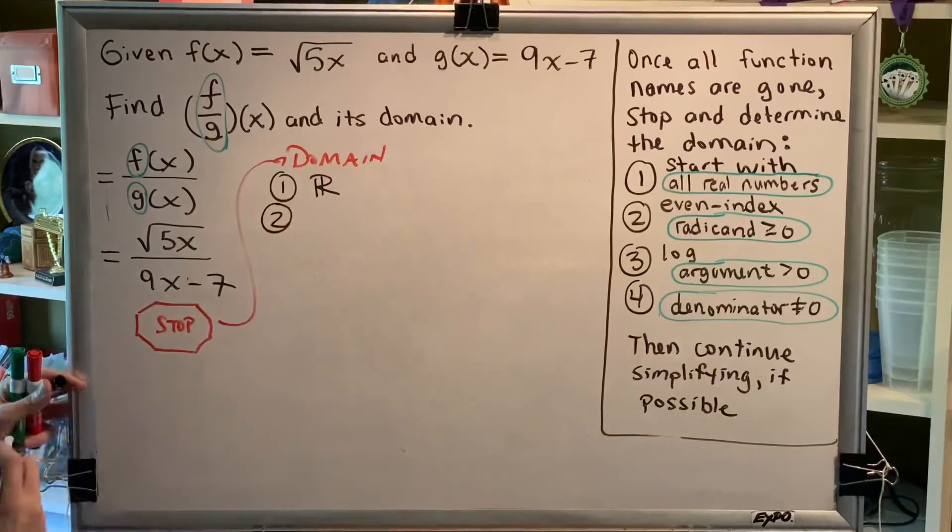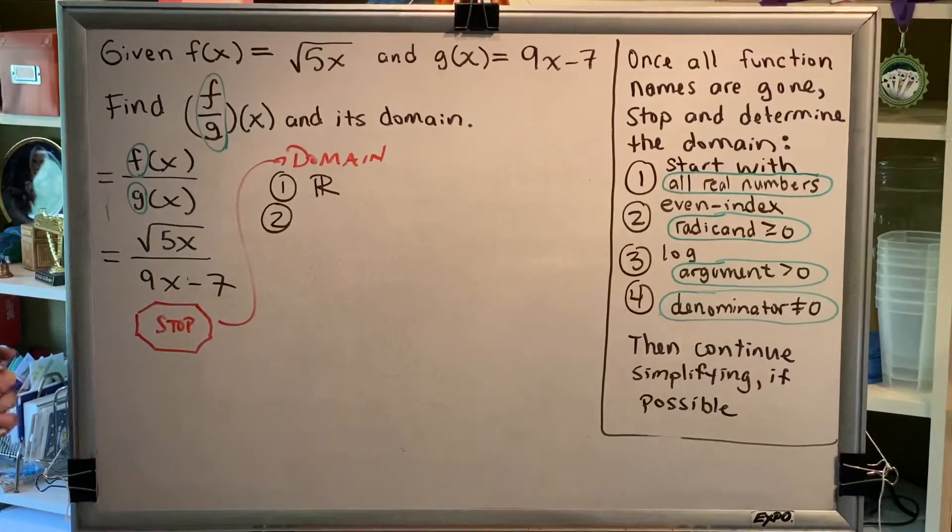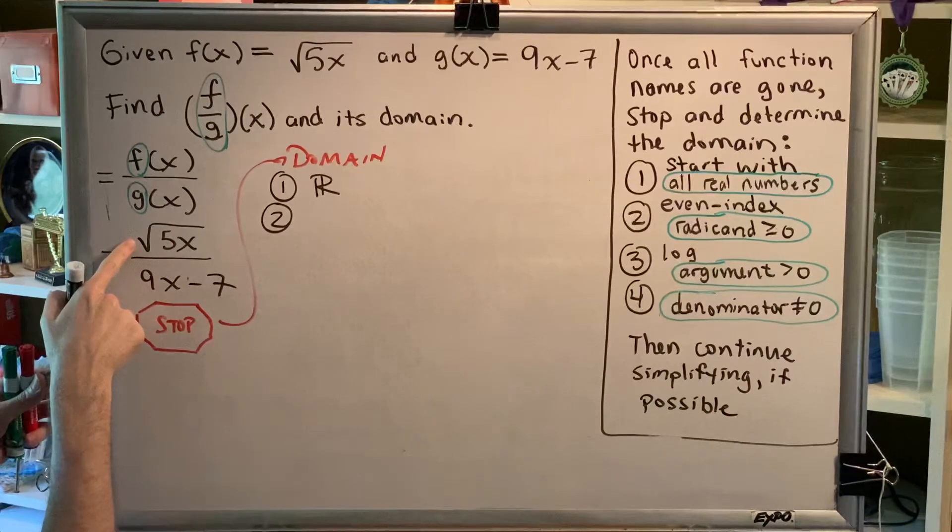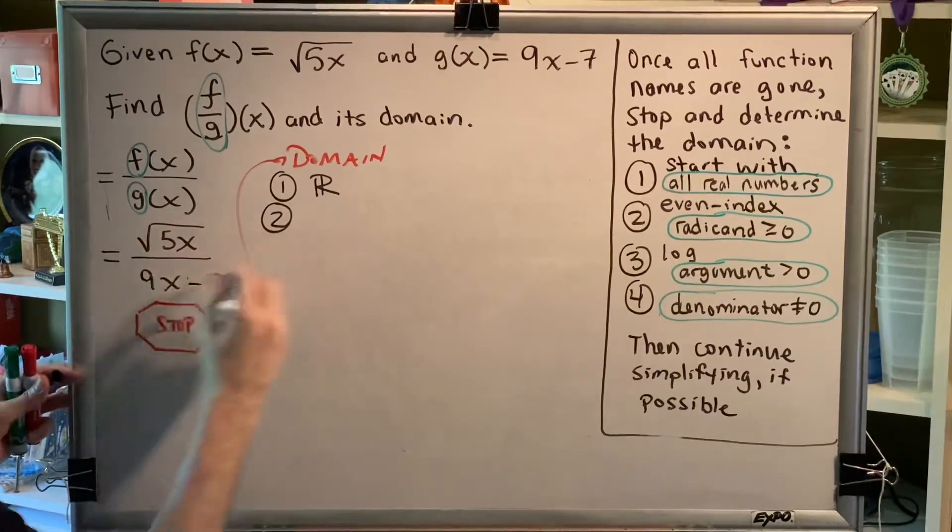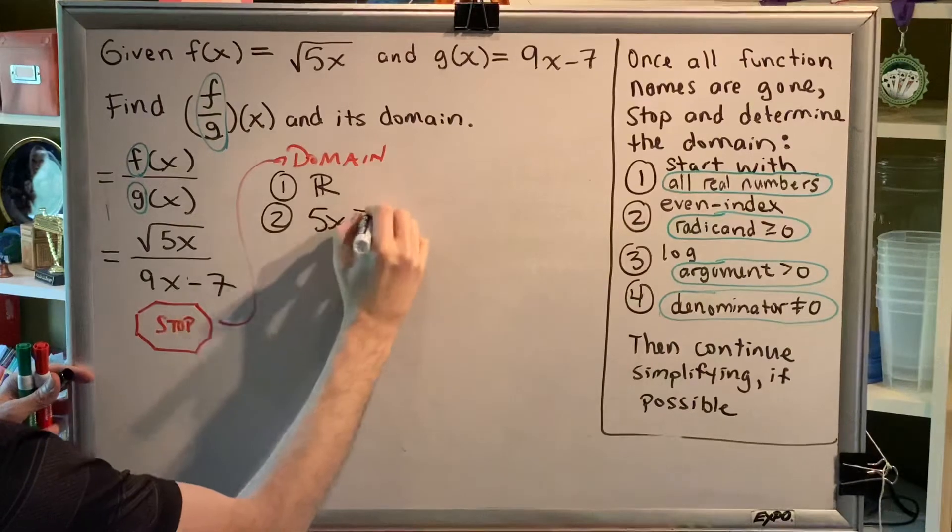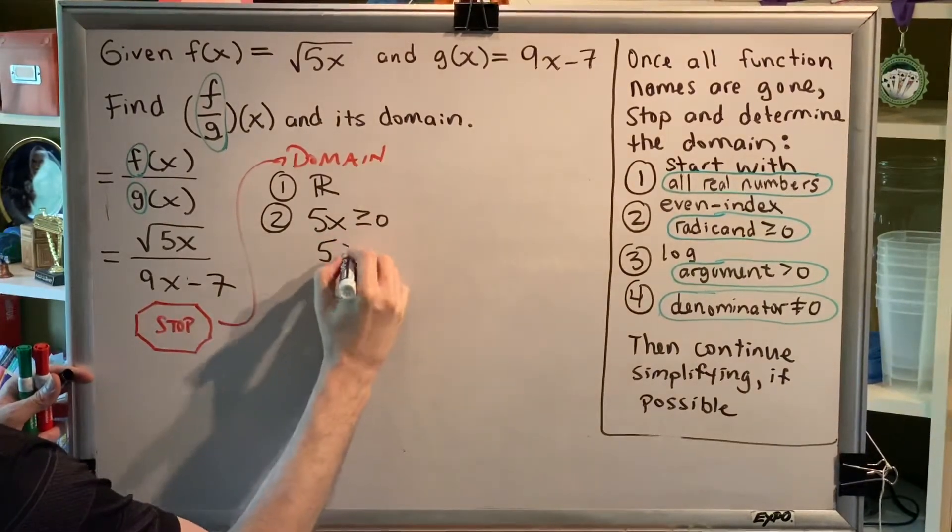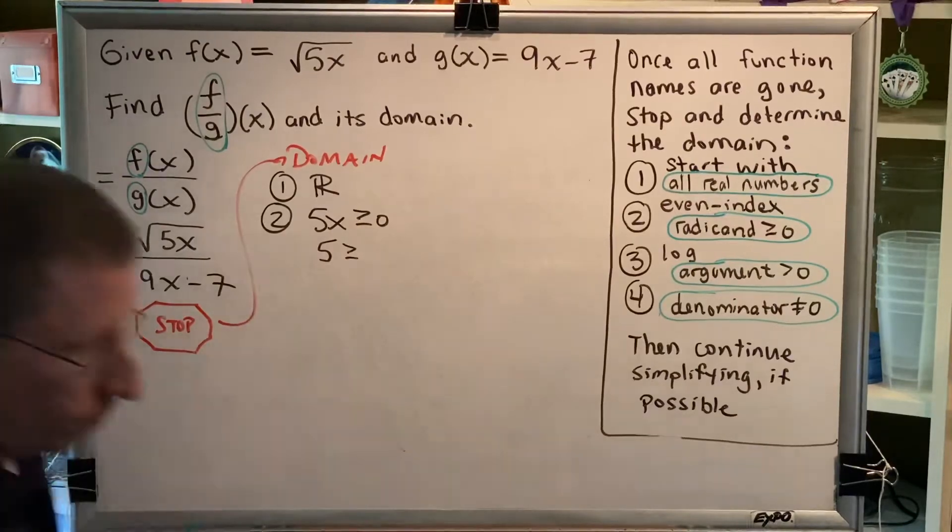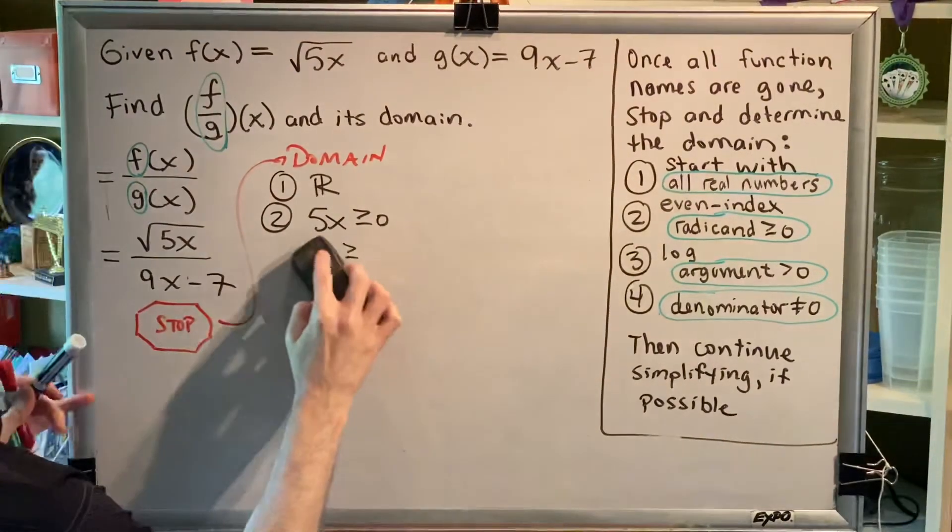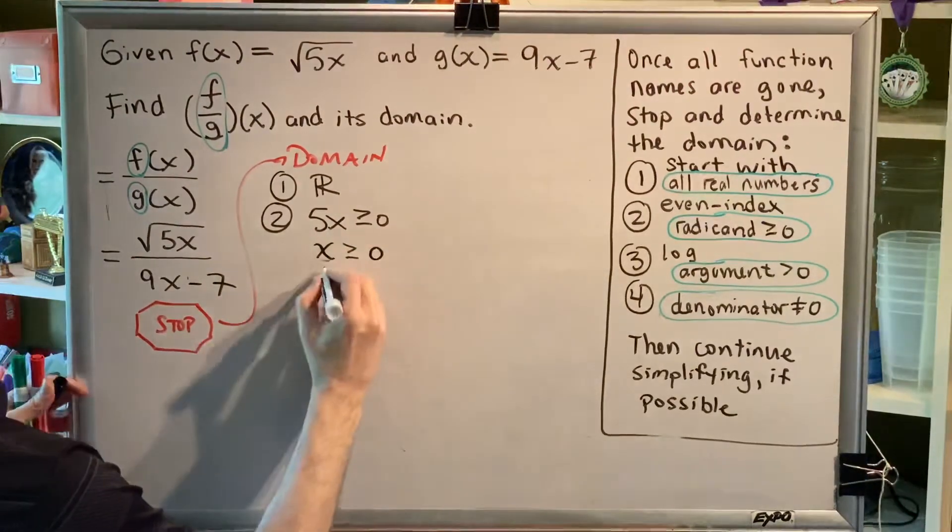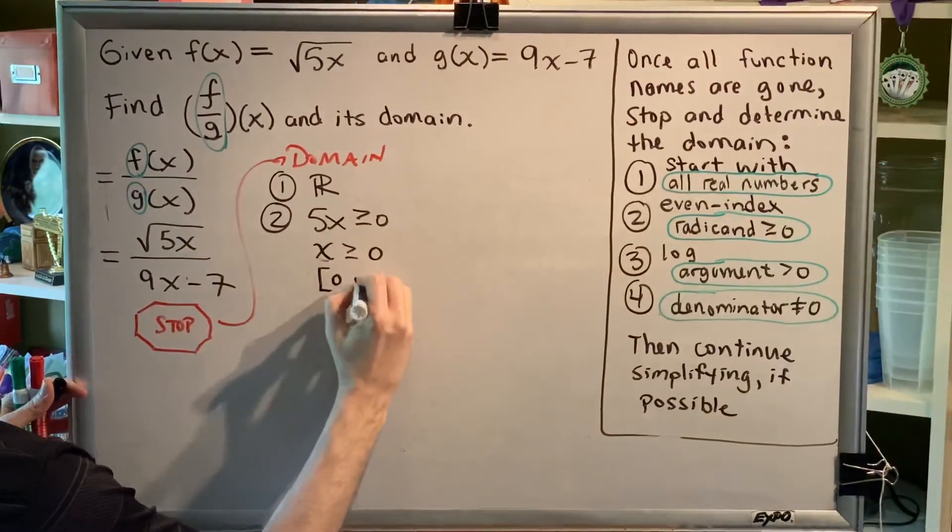Step two, even radicands greater than or equal to zero. I do have an even radicand. This is a square root. The index is two. So the radicand, the thing underneath, has to be greater than or equal to zero. Dividing by five on both sides, I get x is greater than or equal to zero, which as an interval is bracket zero comma infinity.